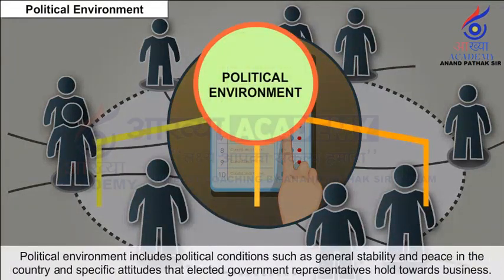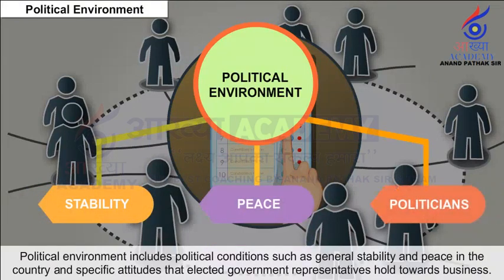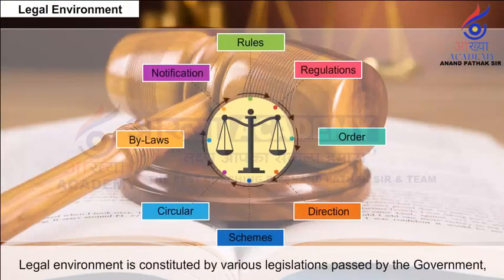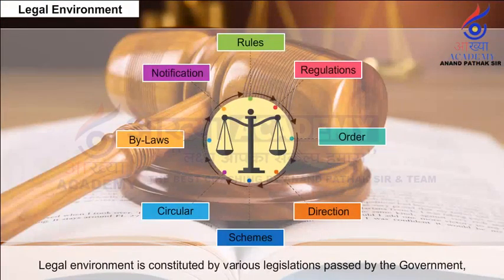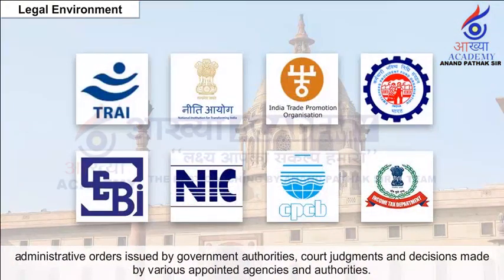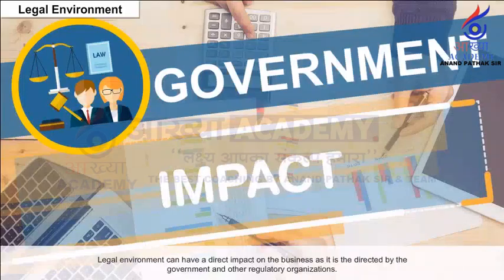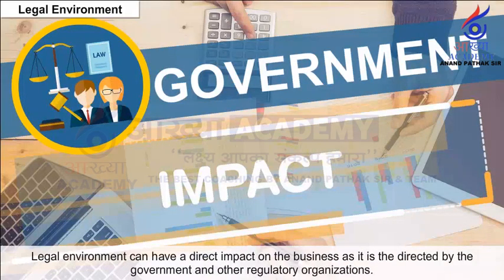Political Environment: Political environment includes political conditions such as general stability and peace in the country and specific attitudes that elected government representatives hold towards business. Legal Environment: Legal environment is constituted by various legislations passed by the government, administrative orders issued by government authorities, court judgments, and decisions made by various appointed agencies and authorities. Legal environment can have a direct impact on the business as it is directed by the government and other regulatory organizations.